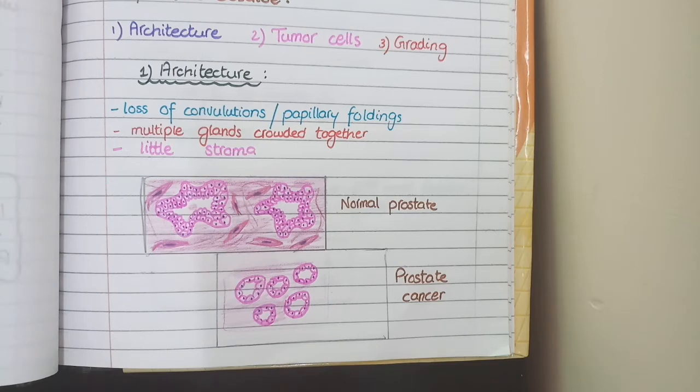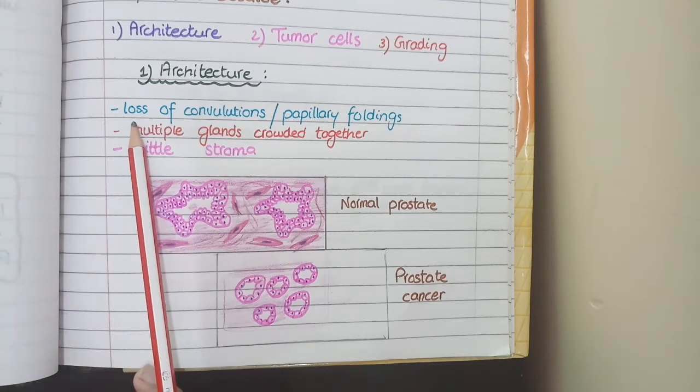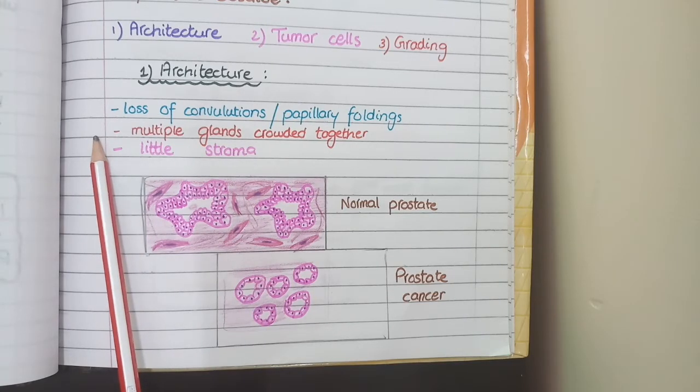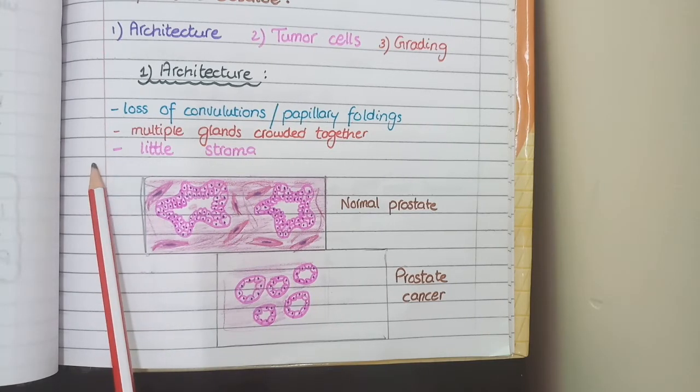So overall, the architecture of prostate carcinoma is such that it shows loss of convolutions and papillary foldings. You see multiple glands crowded together and there is little stroma.